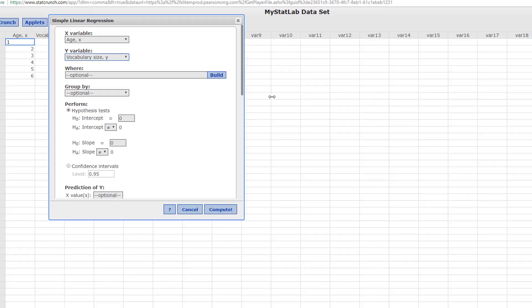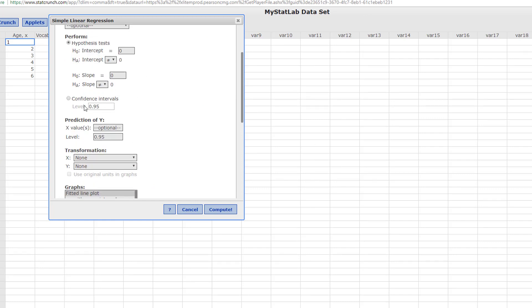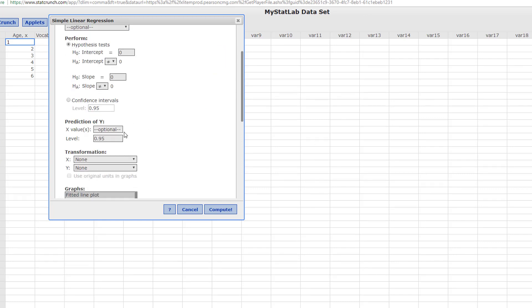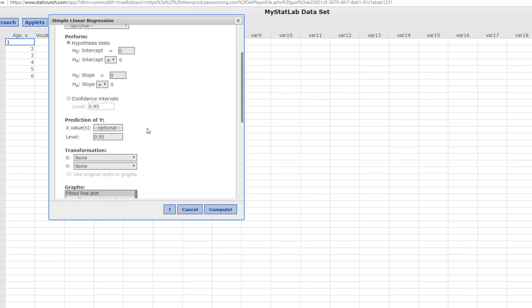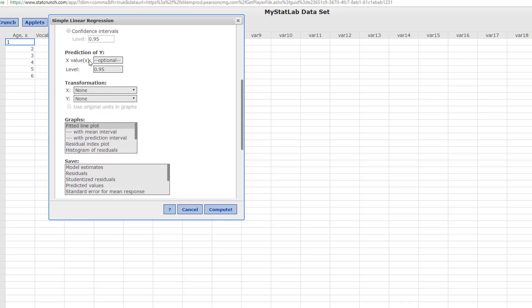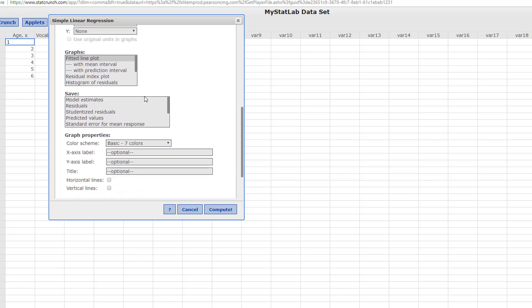Let's make this bigger for right now. I don't really care about all this other stuff, but just so you know, you could do hypothesis tests to see if there actually is a correlation. You can do prediction intervals, but we're not doing all that. But I would like a graph, so I click the fitted line, and I believe that's all I want.